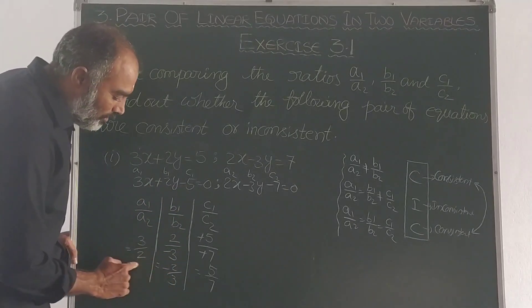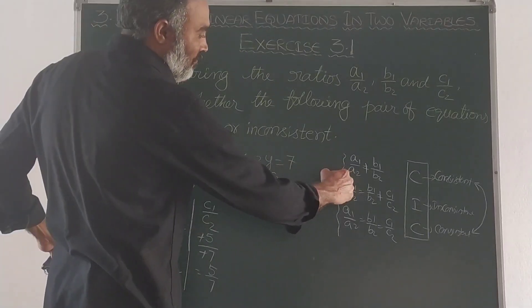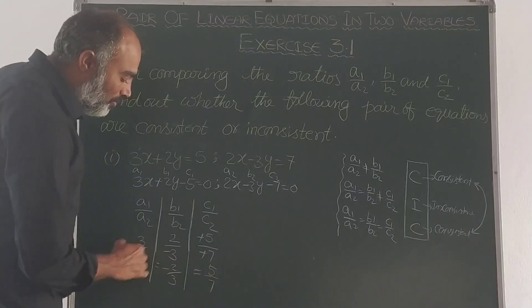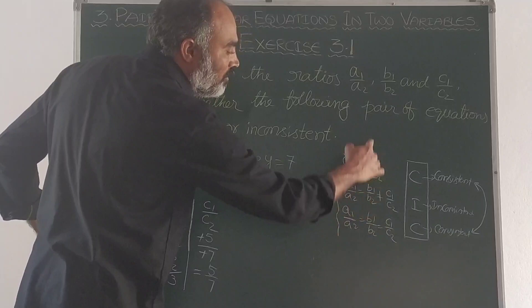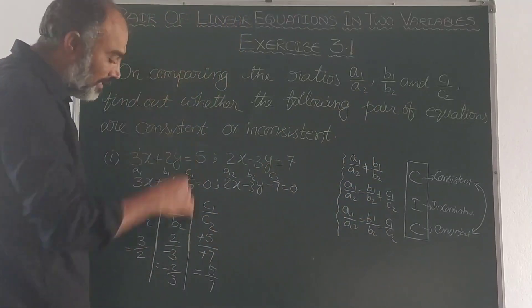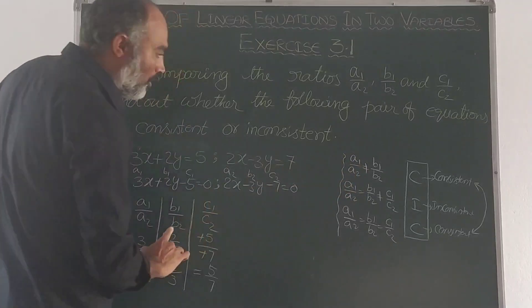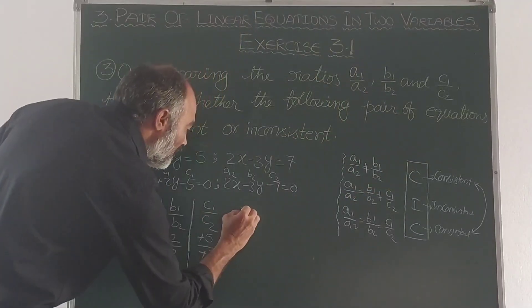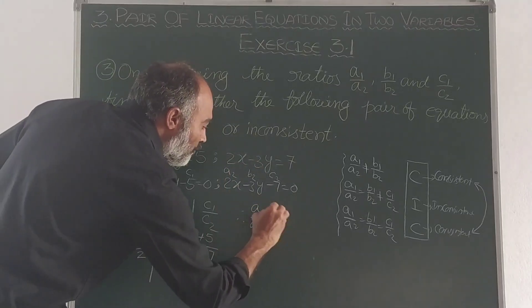3 by 2 is not equal to minus 2 by 3, so the first condition is satisfied. The condition is a1 by a2 not equal to b1 by b2, so this condition applies and the system is consistent.